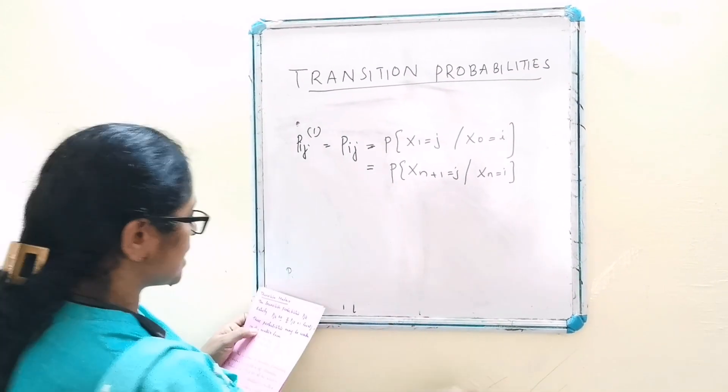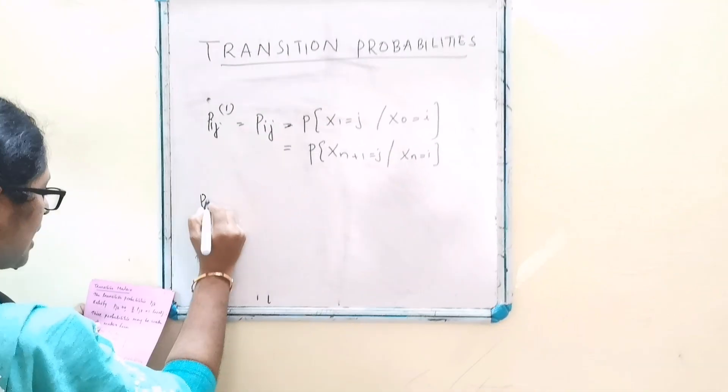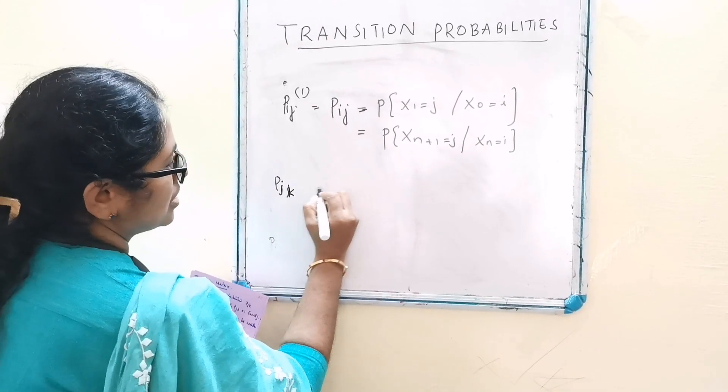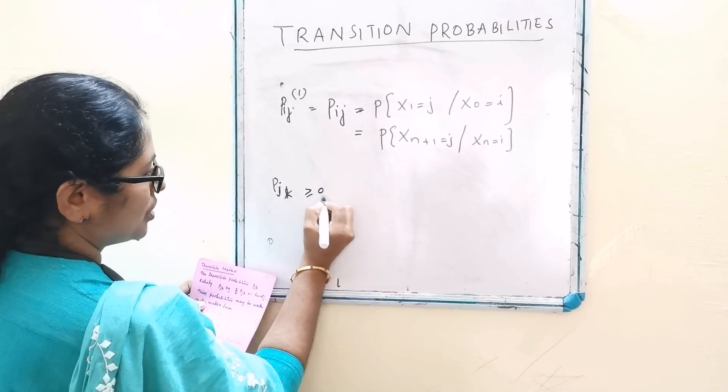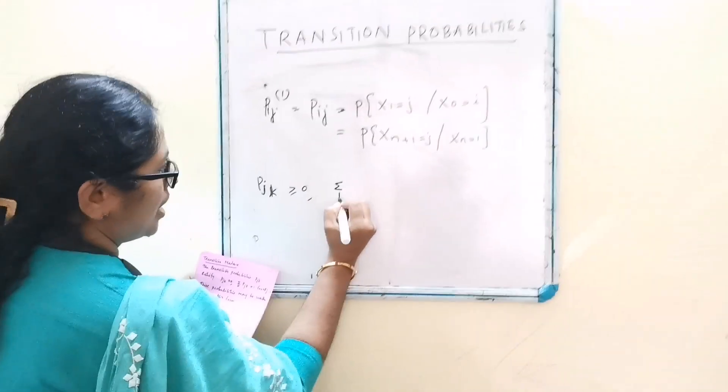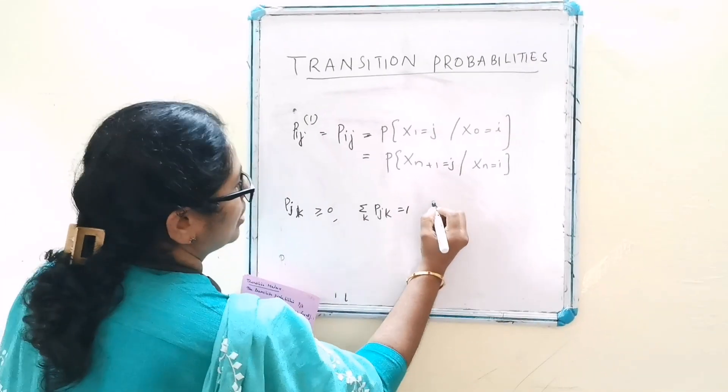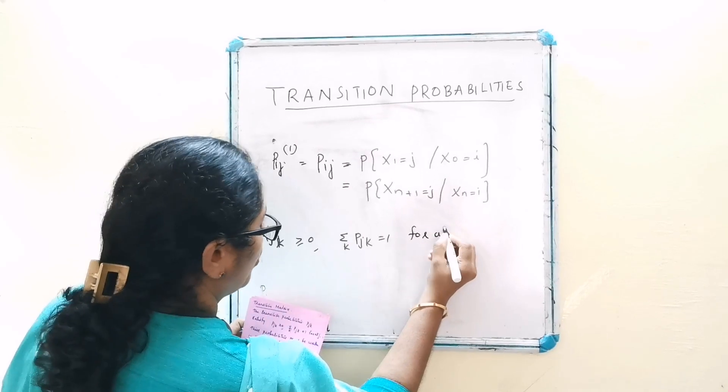The transition probabilities pij(k) satisfy pij(k) greater than or equal to zero, and sigma over k pij(k) equal to one for all j.